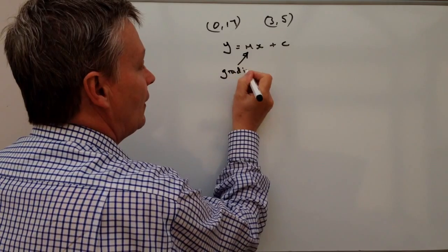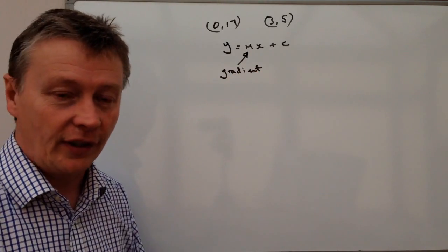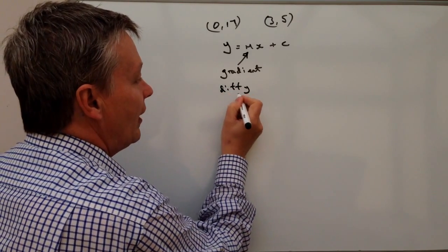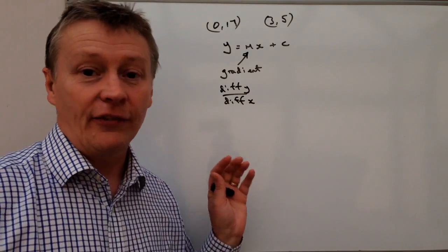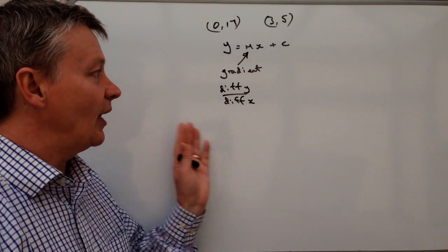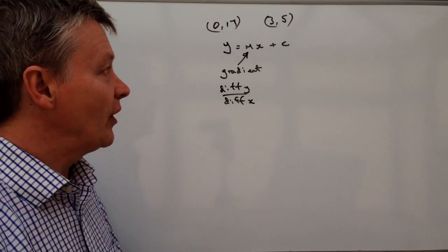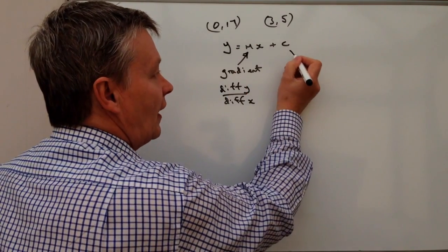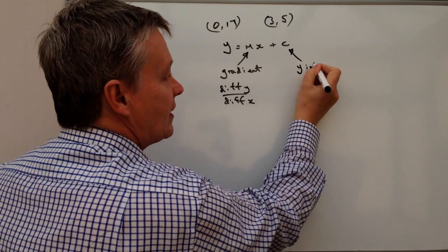The formula we use for that is difference in y divided by difference in x. And if you have a look at some of the other videos in the playlist, there's a few examples on how to use that. The other thing that we need to know in order to answer the question is this value of c, which is called the y-intercept.